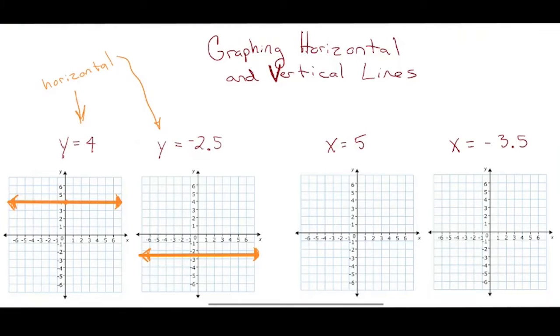Now, let's say you want to graph x equals 5. So that is actually a vertical line. So what I'll do is I'll find 5 on the x-axis, which is right there,